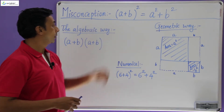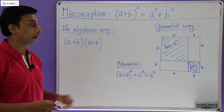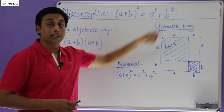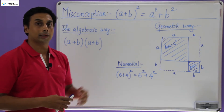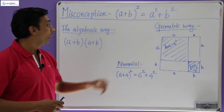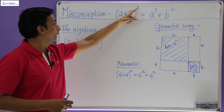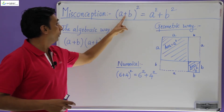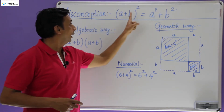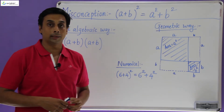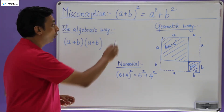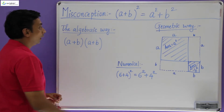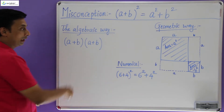Now I am going to explain this misconception. There is a misconception that (a + b) whole square is a² + b². This is what students tend to think, because they think that a raised to 2, there is a plus sign, and b raised to 2 — that should suffice. I am going to prove that this is wrong in three different ways. The first way is the algebraic way.